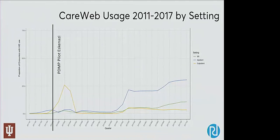We started to look into what caused these blips. The first spike occurred when Eskenazi did a pilot where clinicians in the outpatient setting could see prescription drug monitoring program data from the state through CareWeb — a pilot JT Fennell and others worked on with the MITRE Corporation. When they did that pilot, usage of CareWeb spiked as people went there to look at the PDMP data. Then the state said no — clinicians had to log in separately through a different system — and subsequently CareWeb usage dropped proportionally right back to the same level.